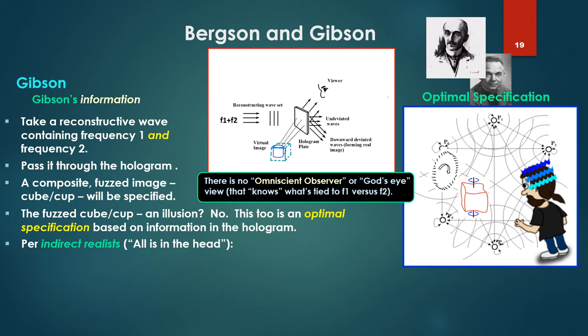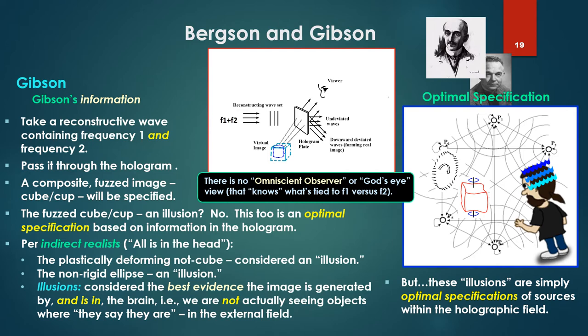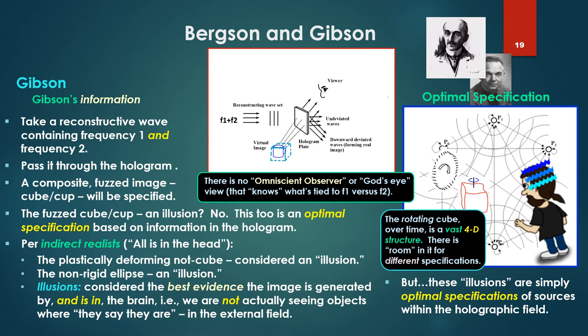Per indirect realist, that is, the all-in-is-in-the-head advocates, the plastically deforming not-a-cube is considered an illusion. The non-rigid ellipse would be an illusion. Illusions are considered by these indirect realists the best evidence that the image is generated by and is in the brain or the mind. That is, we are not actually seeing the objects where they say they are, as common sense says, in the external field. But in this framework, these illusions are simply optimal specifications of sources within the holographic field. I would note that the rotating cube over time in fact comprises a vast four-dimensional structure. And there is therefore room, so to speak, for different specifications.